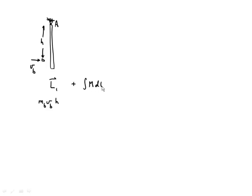I'd like to take a different approach here — we'll get the same results but we'll also be able to find the impulse at A. Keep in mind that before the bullet strikes the plate, the angular momentum L1, a vector quantity, equals the mass of the bullet times the velocity of the bullet times distance H. According to impulse and momentum, we then add the integral of the moment DT.